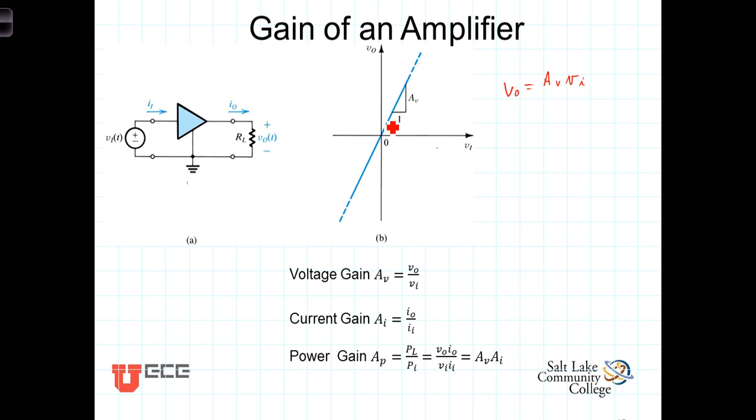Either in amplitude of the voltage or amplitude of the current or a combination of the two. The amount of amplification that is produced is referred to as the amplifier gain, and it's defined as the ratio of the output to the input.